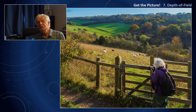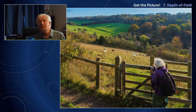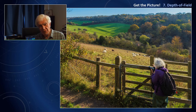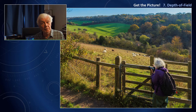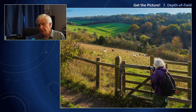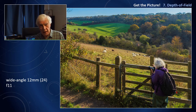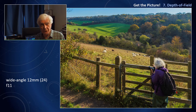I take you now to a local beauty spot in the Surrey Hills — Happy Valley, not far from Caterham in Surrey. Now to maintain sharpness from front to back, from where Natasha, my very good friend using an Olympus camera, is standing, she is sharp and so is the background. To ensure that both halves of the picture are absolutely sharp, I've used a small aperture — f11, f16 possibly — and a wide angle lens.